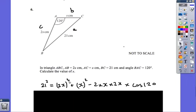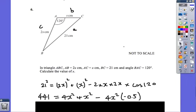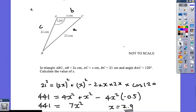Now, here's the tricky bit. I've got 2x all squared. Now, 2x all squared is not 2x squared, it is 4x squared. So 2 squared is 4, x squared is x squared. And I've got 2 times x times 2x, which is 4x squared. Cos 120, stick it on your calculator, you will get a negative 0.5. It's okay, you can have a negative. So I get 441 equals 4x squared plus x squared minus 4x squared times by minus 0.5. This is why it's an A star question.